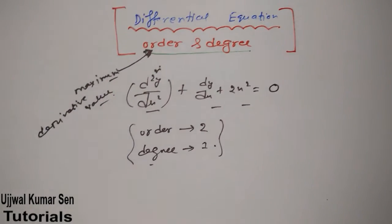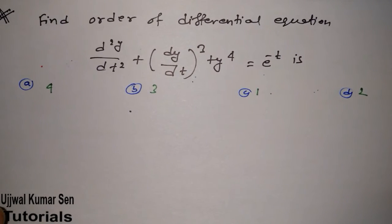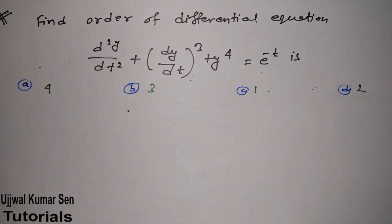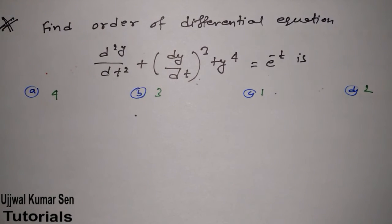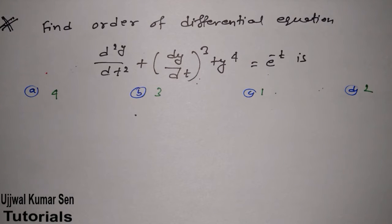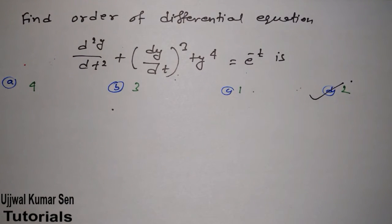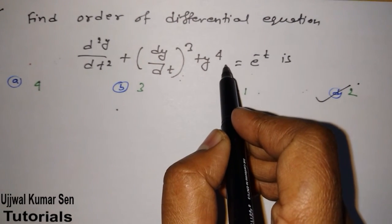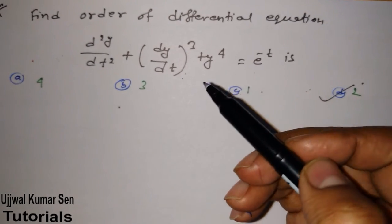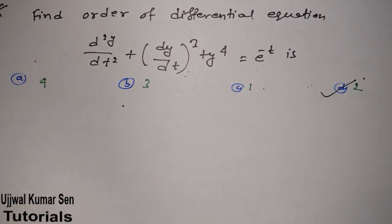Now let's go to problems from GATE previous year examinations. This question was asked in GATE previous year, which is important. What you have to do is follow the steps I've shared. Find which term has the maximum derivative — that is the first term — therefore its order is two. So option D is the right answer. Just looking at the equation you can mark the right answer.